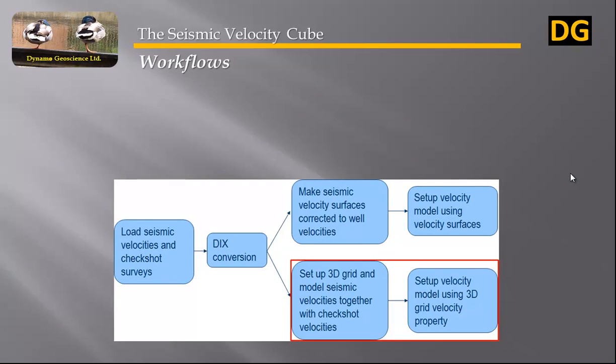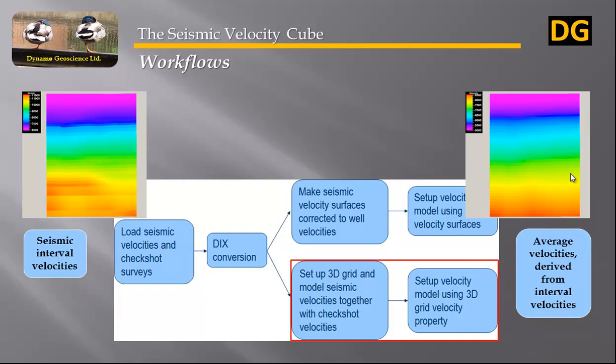The second approach of seismic stacking velocity workflows are using velocity cube in a 3D grid for modeling. As you see, an identification of velocity anomalies justifies modeling of interval velocities even if average velocity is needed.